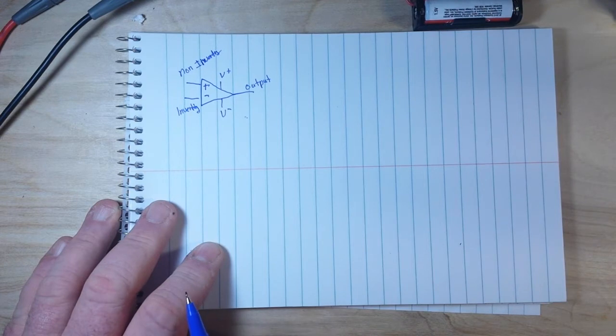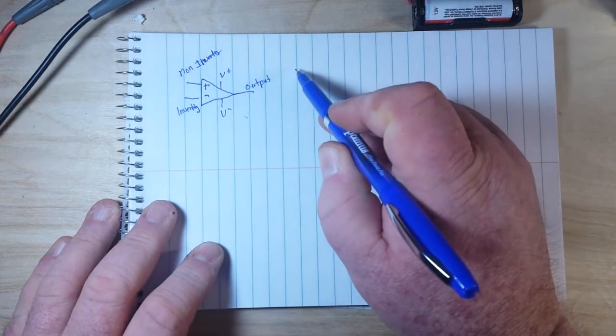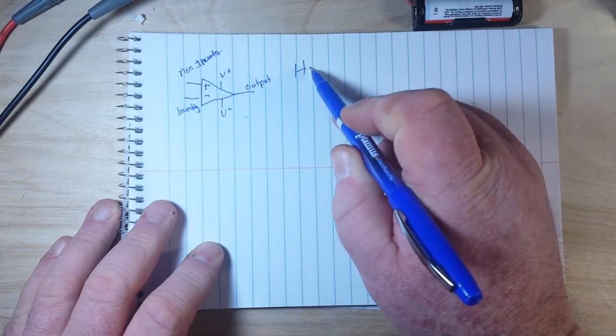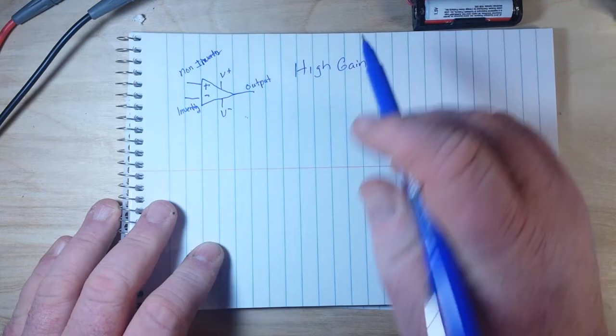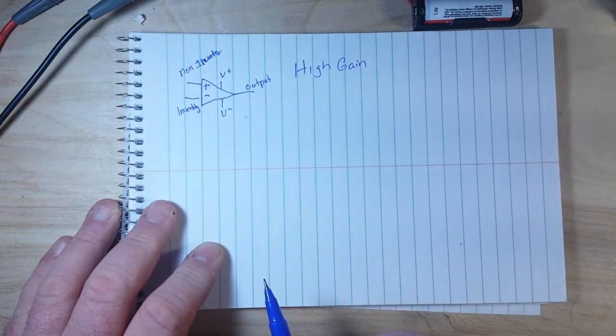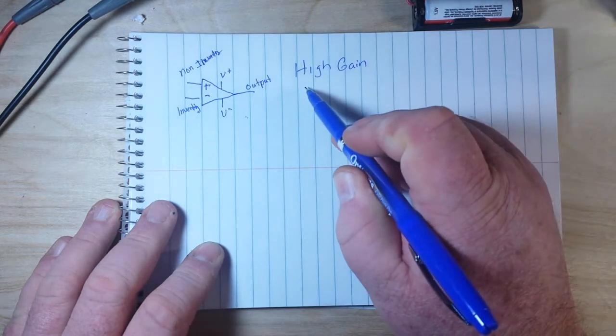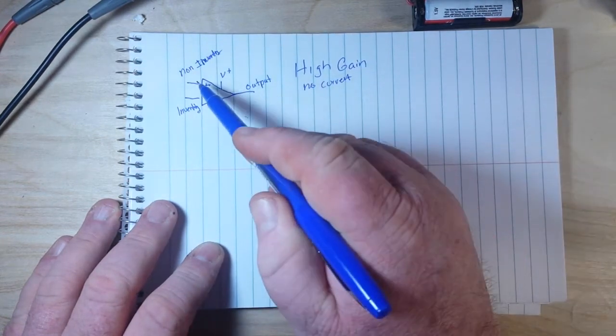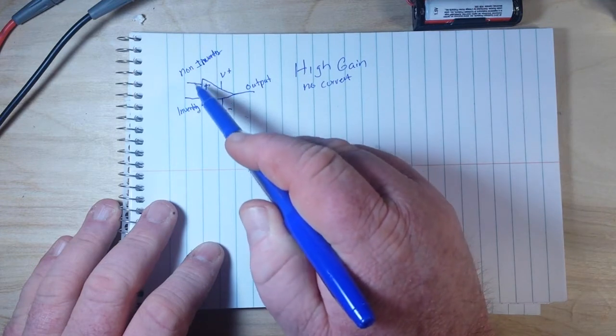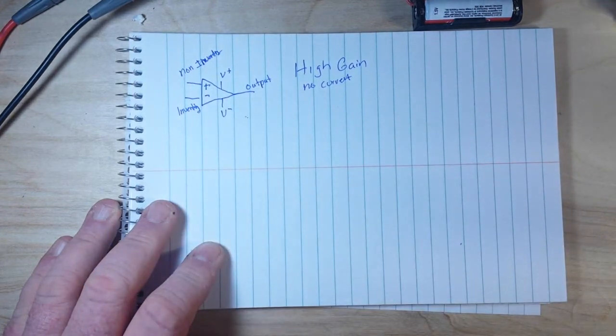And as I said, it's an op amp, it is an amplifier, and its features are a high gain. Also, it uses no current. These inputs here will not take any current. All they do is read the voltage. They sense the voltage.